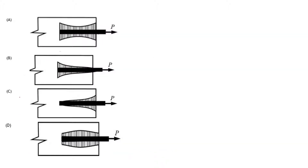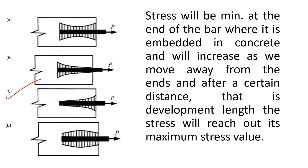The correct option is C. The stress will be minimum at the end of the bar where it is embedded in the concrete, and it will increase as we move away from the end. After a certain distance — the development length — it develops its full stress. A test is done to ensure full strength in the case of re-barring; this test is known as the pullout test.